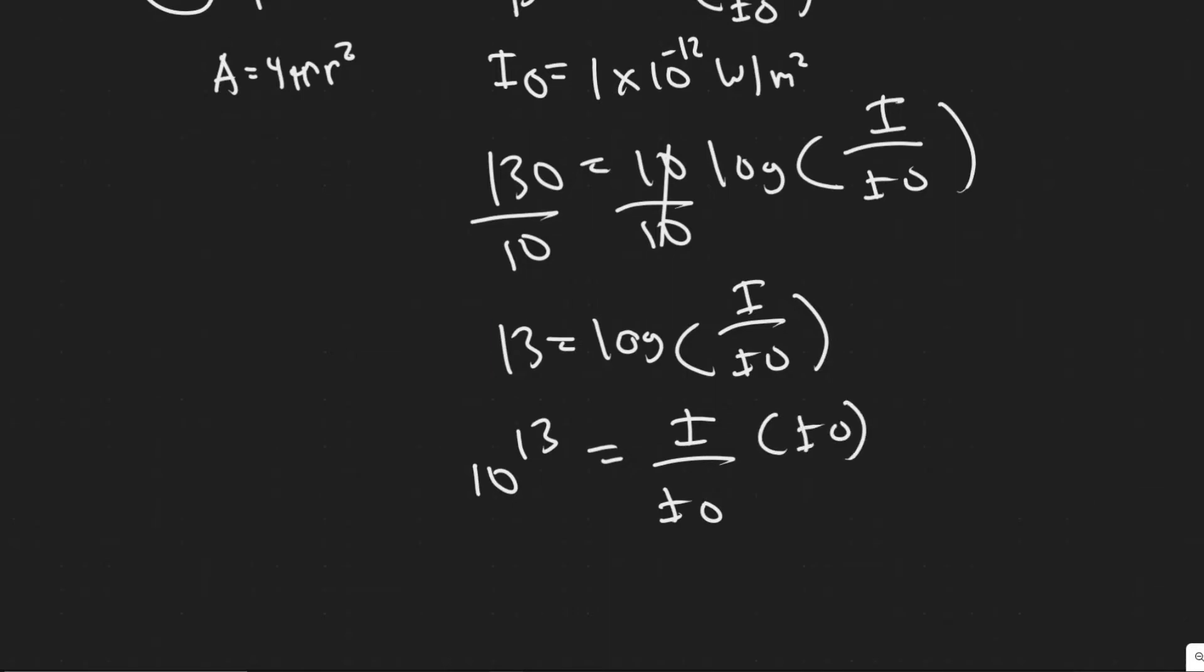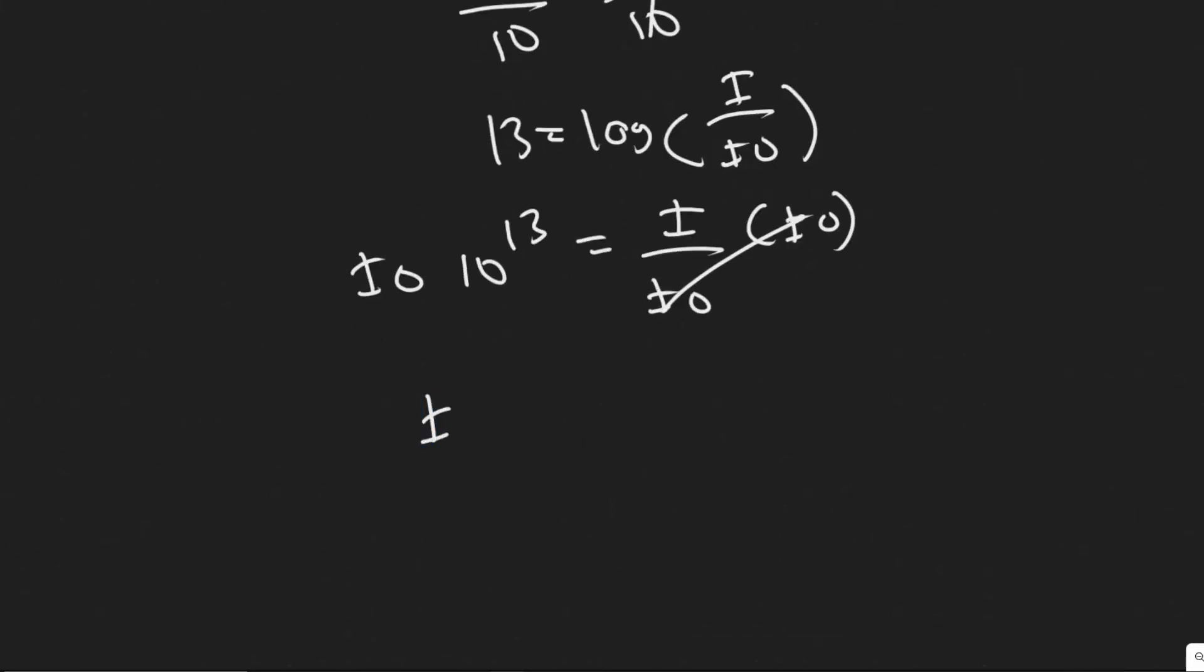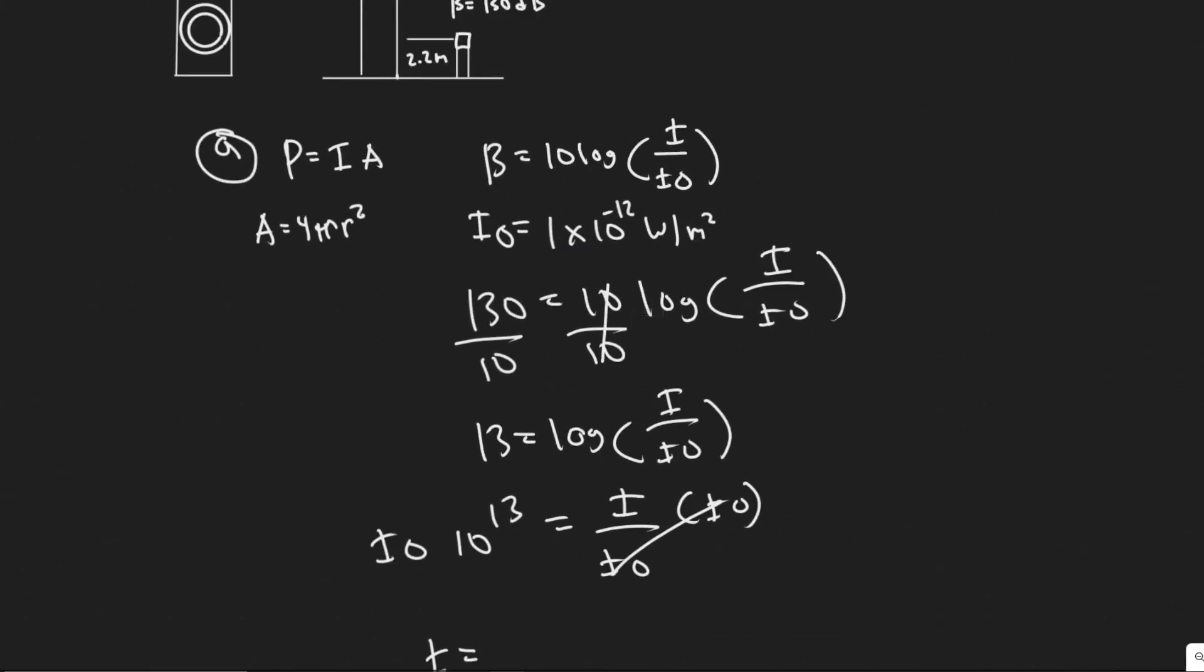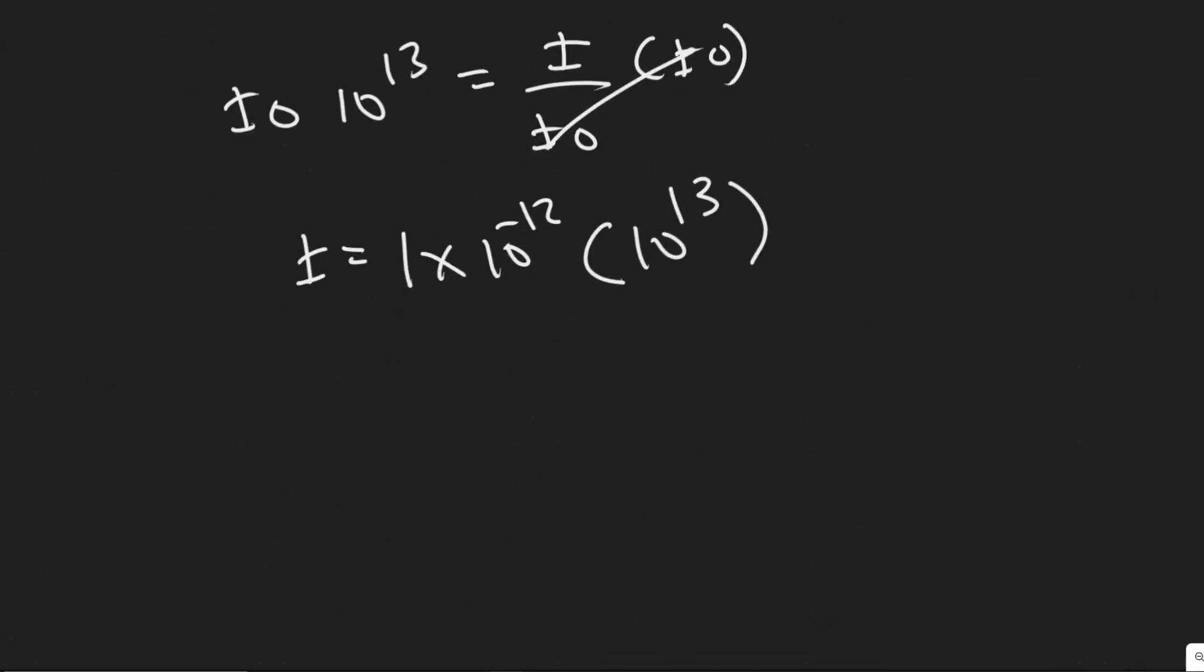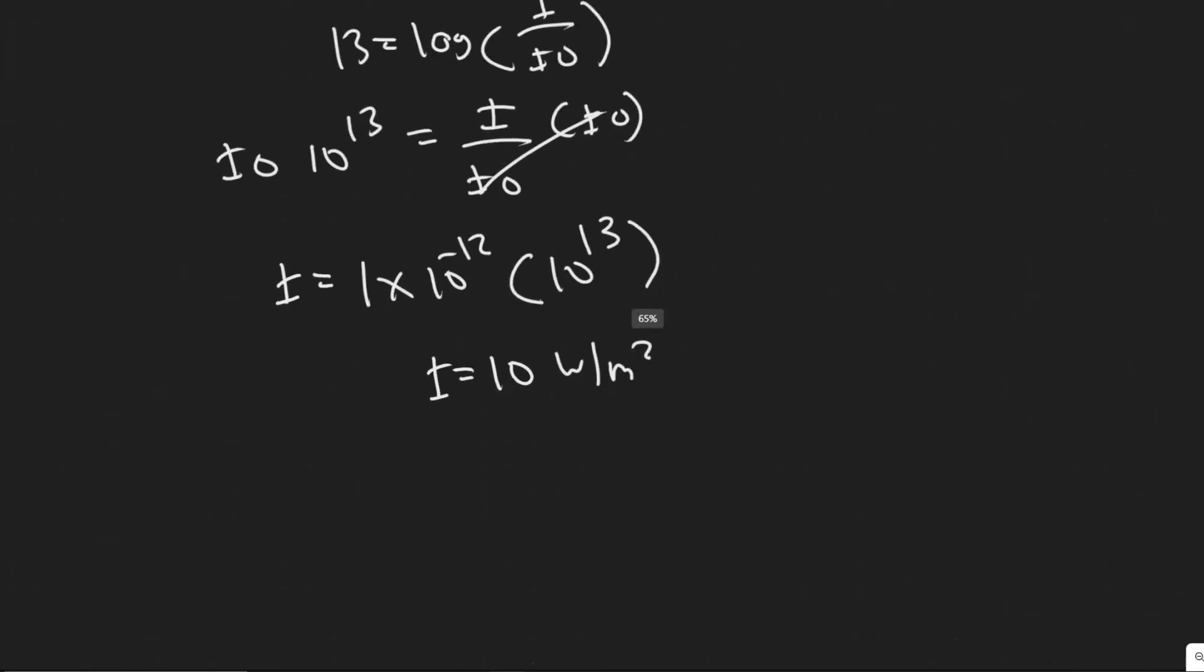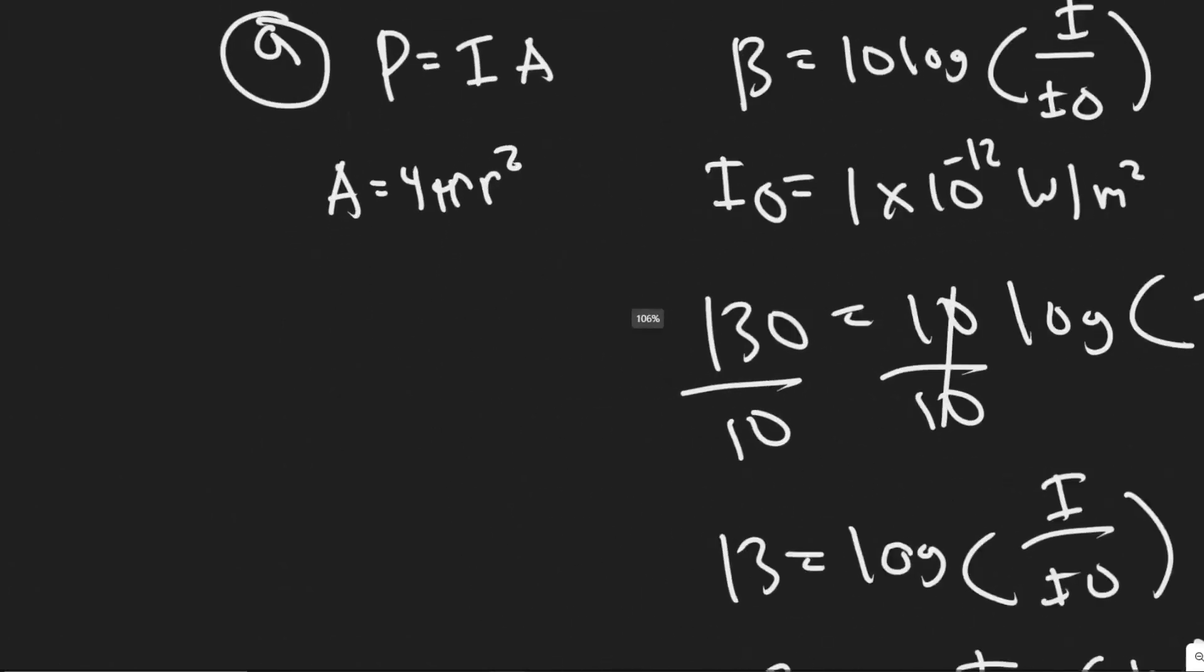To solve for I, you would just multiply both sides by I₀. So we'll have I equals, as I said before, I₀ is this value right here, 1 times 10 to the minus 12, and then multiplying that by 10 to the 13. So let's go ahead and see what we get. 1 times 10 to the minus 12 times 10 to the 13. So when you do this, you're just going to get a value of 10. So I is going to be equal to 10 watts per meter squared, because that's the units of intensity.